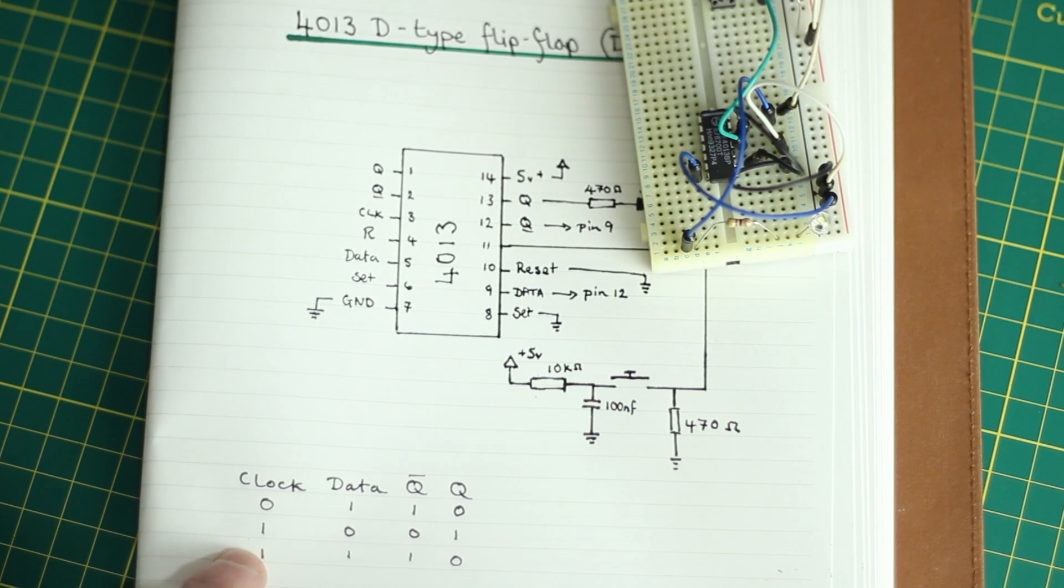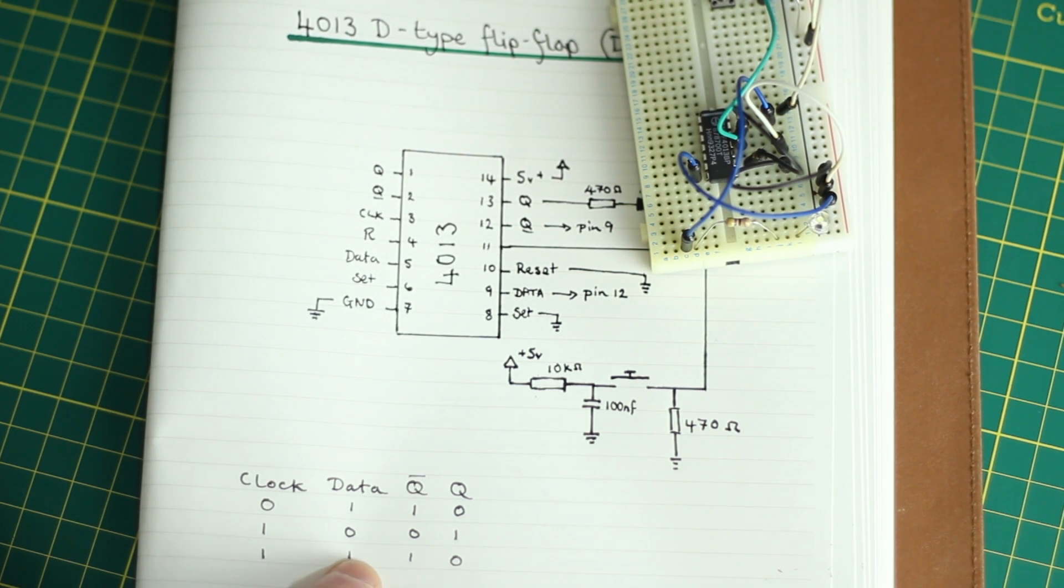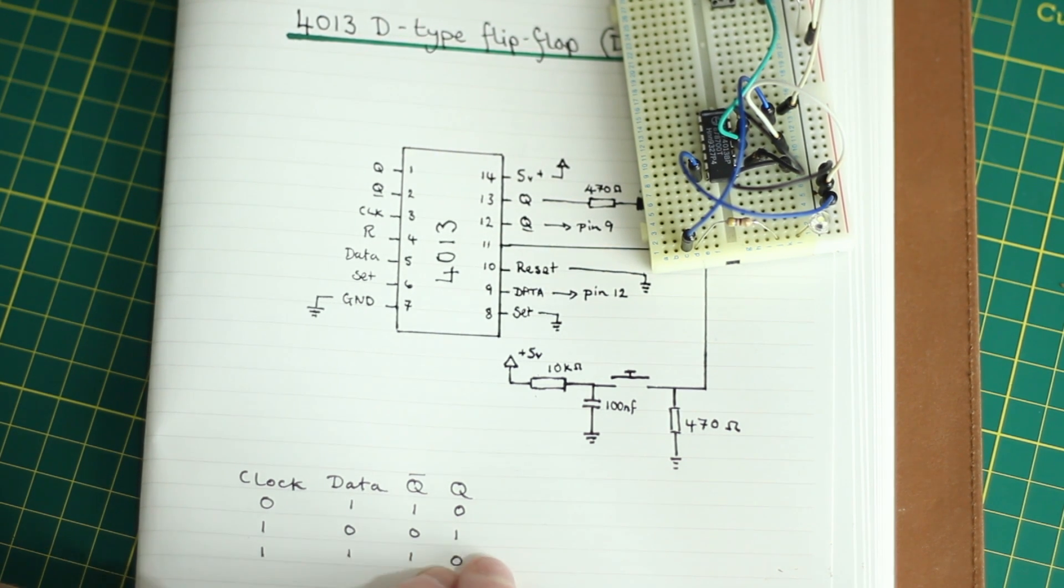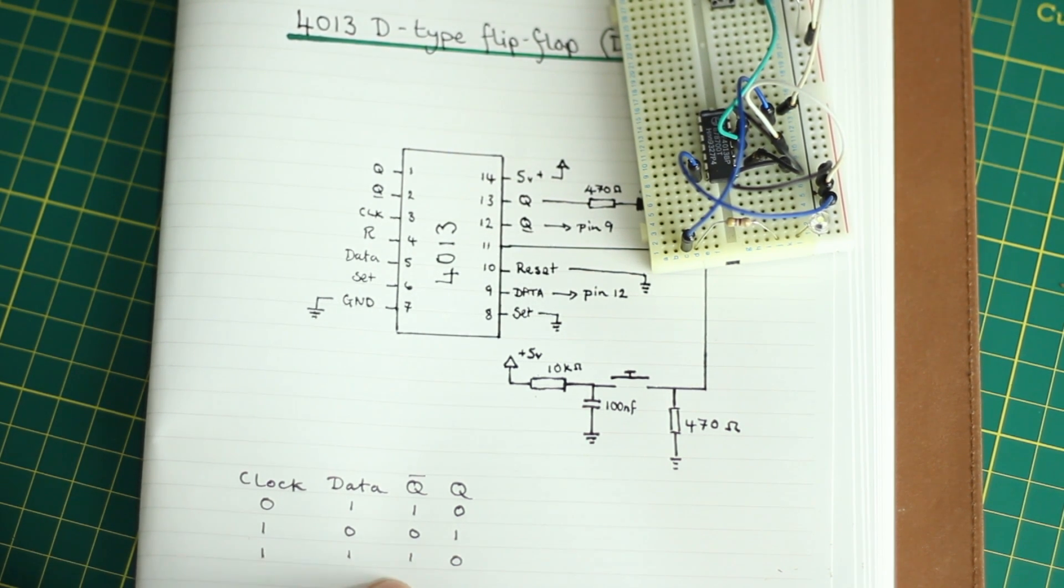And again, when we clock again, when we send the clock pulse high, we'll transfer what was on data to Q, which was high. And then it will go opposite again, and so data and Q2 will go high.